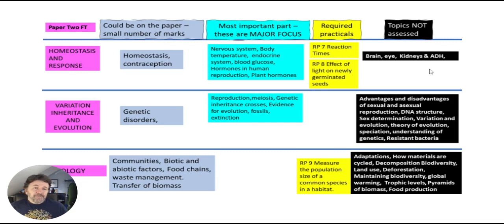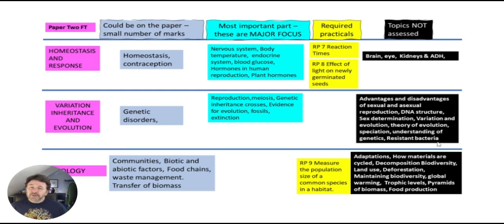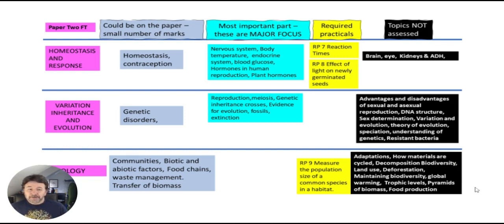For Paper 2, they did nothing on the brain, the eye, the kidneys and ADH. They did nothing on advantages and disadvantages of sexual and asexual reproduction, DNA, variation, evolution, theories of evolution, speciation, or understanding of genetics. They did nothing in ecology related to decomposition, biodiversity, land use, deforestation, global warming, trophic levels, and pyramids of biomass.